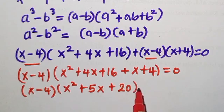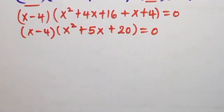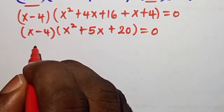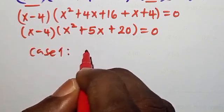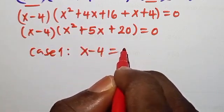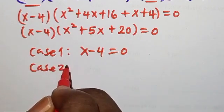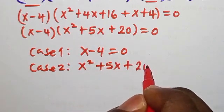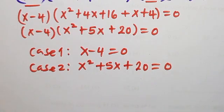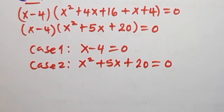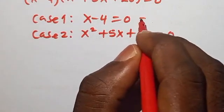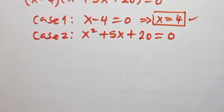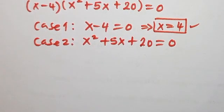Using the zero product property, Case 1: x - 4 = 0, which gives x = 4. That is the first solution.